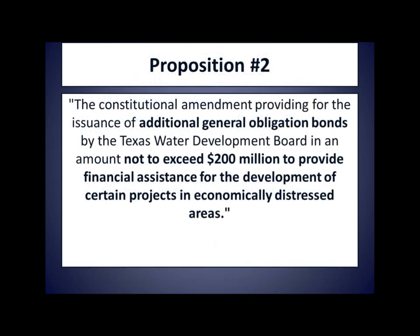Moving on to Proposition 2. The ballot will read: 'The constitutional amendment providing for the issuance of additional general obligation bonds by the Texas Water Development Board in an amount not to exceed $200 million to provide financial assistance for the development of certain projects in economically distressed areas.'